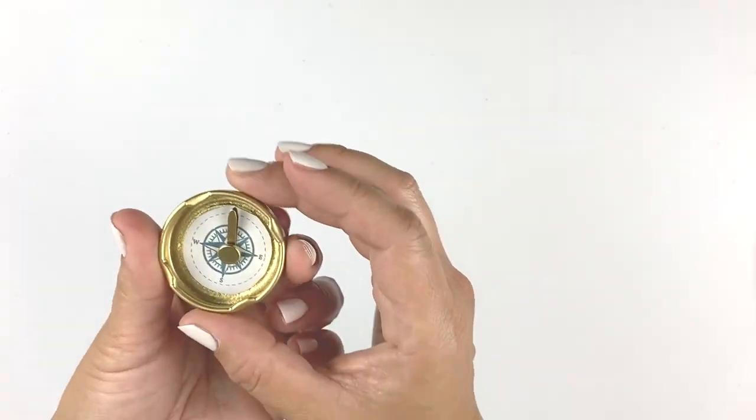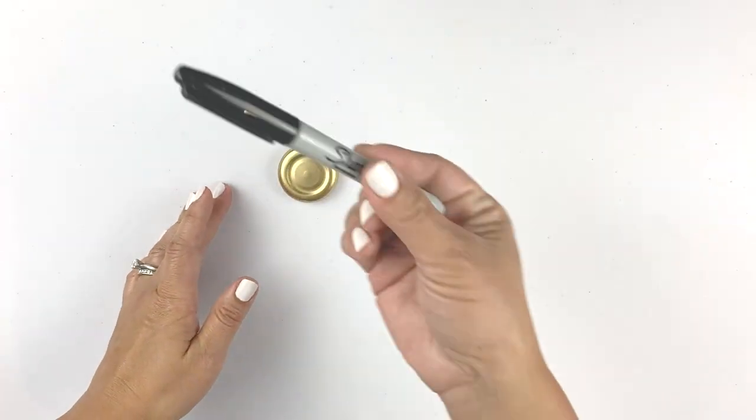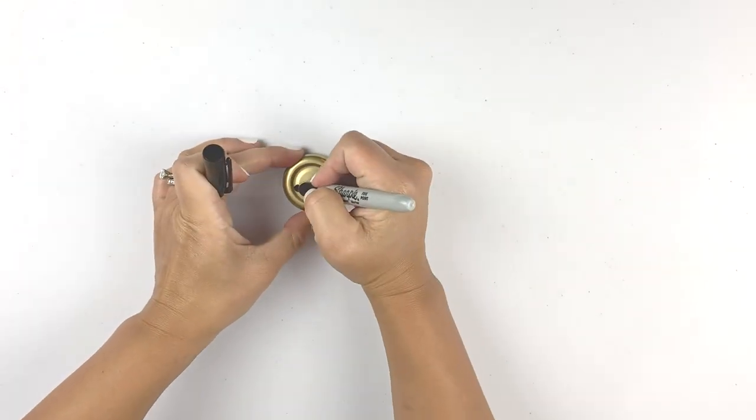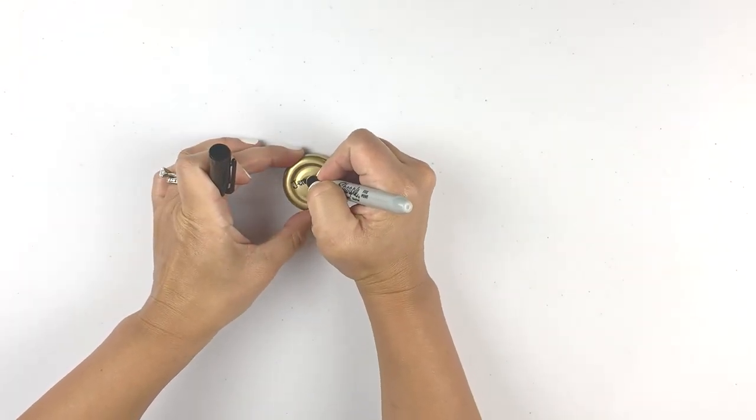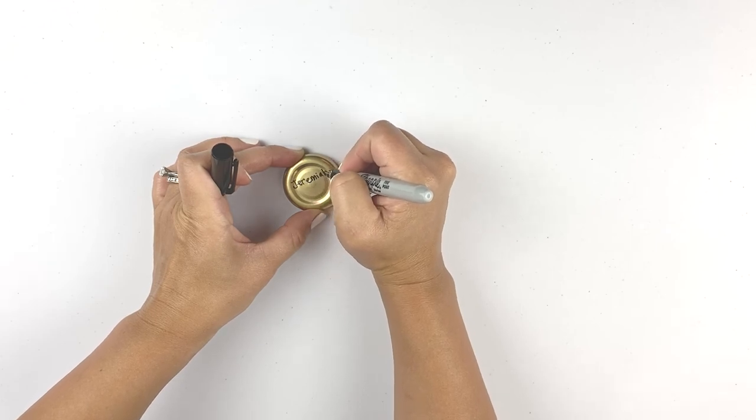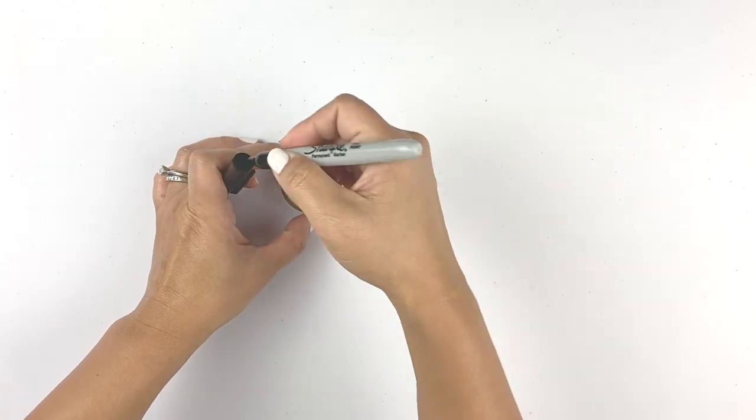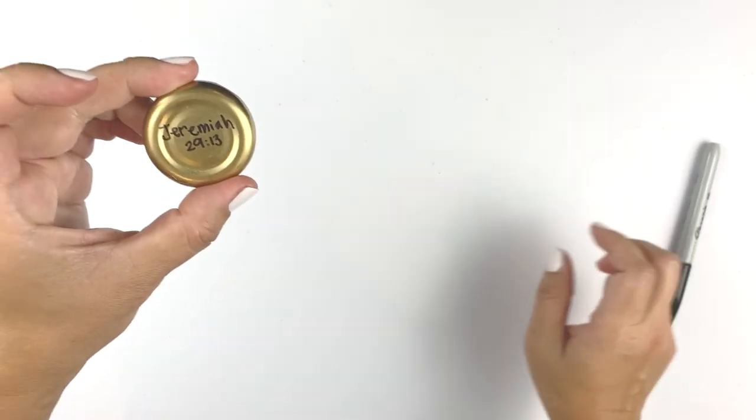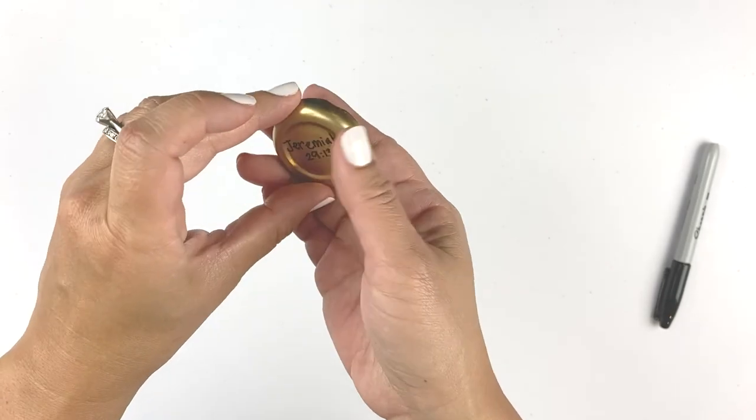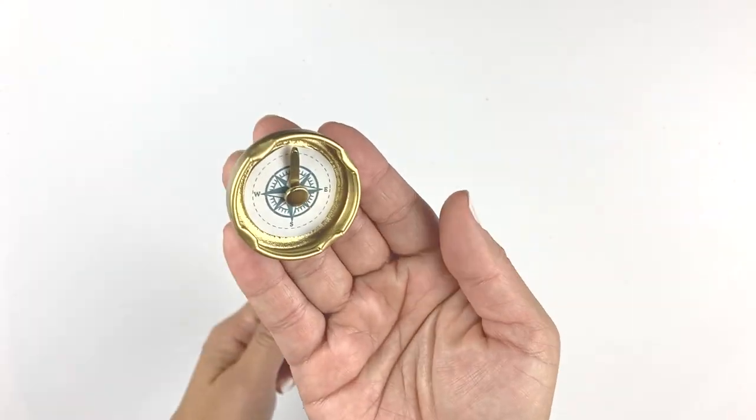Now so that we can remember what our verse was for the summer, turn it over and with a sharpie you can write down Jeremiah 29:13. When you look for me with all your heart you will find me. Here is our finished craft.